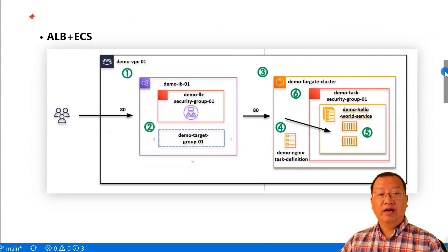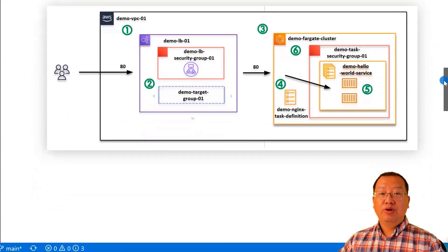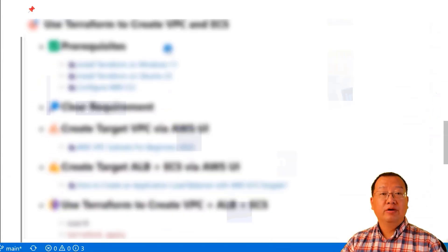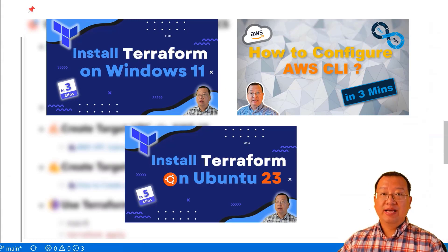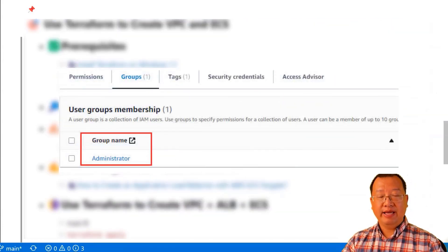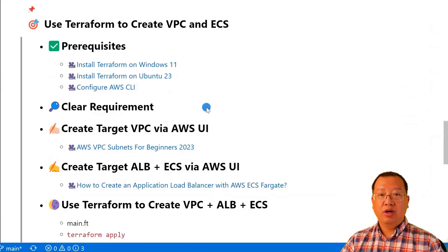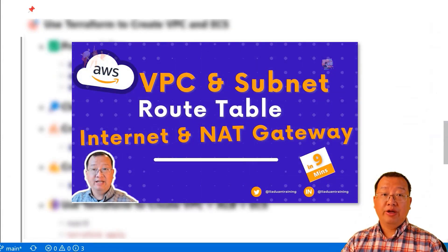Do not worry if the architecture seems complex — I'll break it down into six steps for you. First, make sure that you have Terraform installed on your development box. I have videos available for both Windows and Linux installation. Also ensure that your AWS command line interface is configured correctly. In my case, the CLI user is in the admin group. Next, in your project, you need to meet certain requirements. For the network resources, I recommend watching the video 'AWS VPC Subnets for Beginners' — it covers all related concepts.